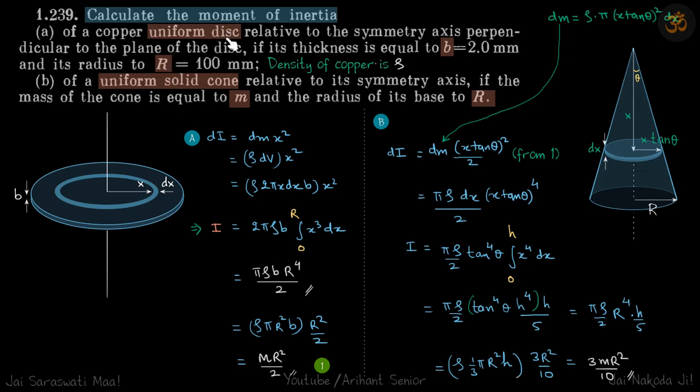Calculate the moment of inertia of a uniform disc and a uniform solid cone. We can assume the density to be ρ. We need to calculate the inertia of the disc with respect to this axis.